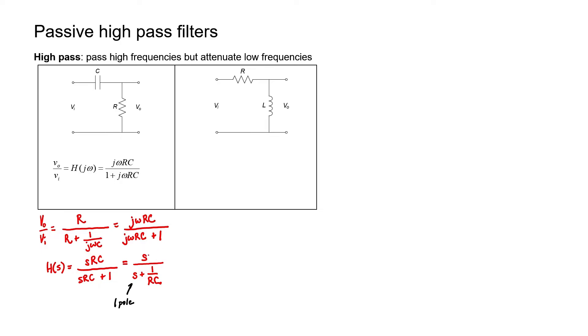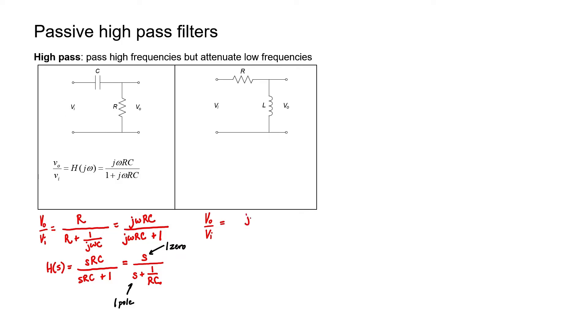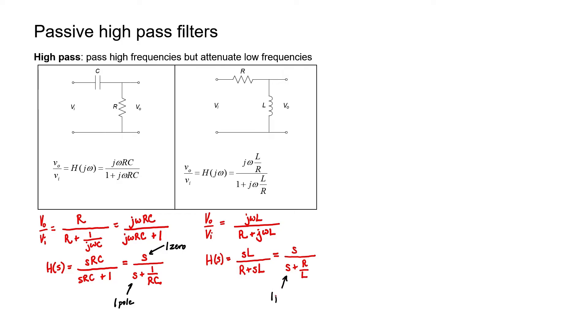When we looked at low-pass filters, we didn't have any S in the numerator, but we have an S here. This is called a zero. That's a key difference: low-pass filters have poles but not zeros, while high-pass filters have both zeros and poles. Looking at the LR circuit, we have our inductor in the load position. Dividing everything by L, we can again see one pole and one zero. We can recognize RC as a time constant and L over R as a time constant. Although these two circuits look different, the transfer functions work out to be the same.